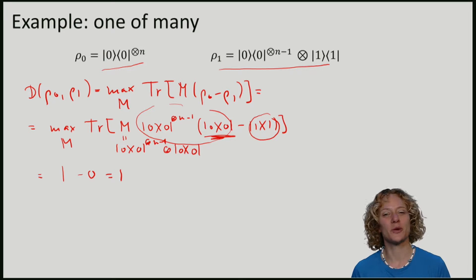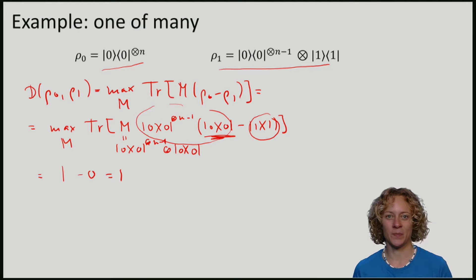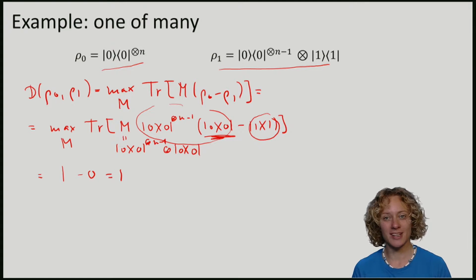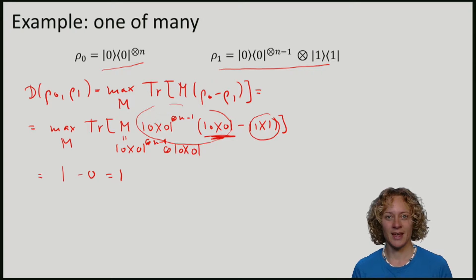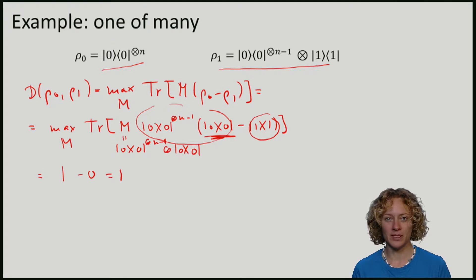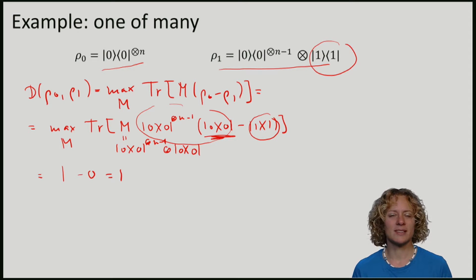This means I can perfectly distinguish these two states. It is easy to understand why: I can ignore all the first n−1 qubits and just look at the last one. If the last qubit is |0⟩, I have ρ₀; if it is |1⟩, I have ρ₁. A state can look very similar on many qubits, but if they look very different on even one of them, the trace distance can be large.